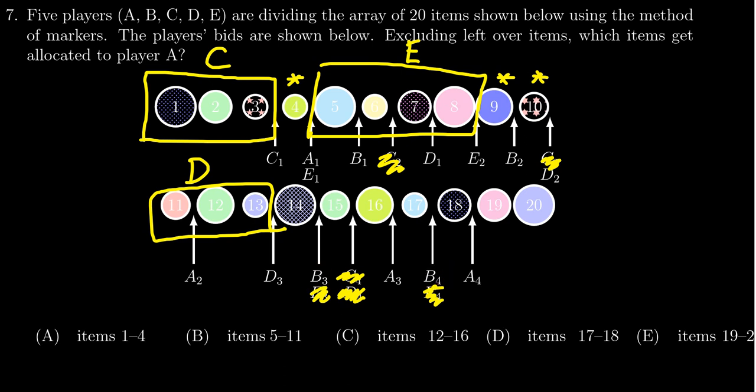Items 15 through 17 will be allocated to B. Item 14 is also extra.